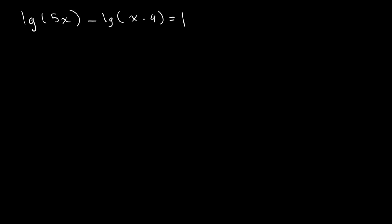And we see that one is being subtracted from the other. So from this we can deduce that we need to use the division law. So that would give us lg of 5x over x minus 4. And this is equal to 1.